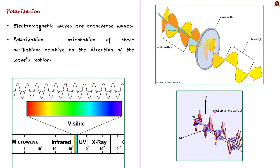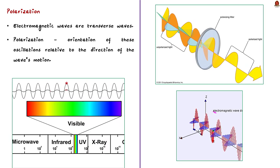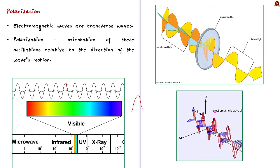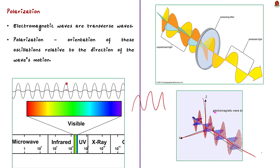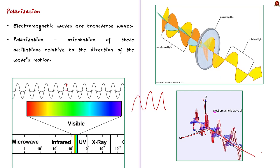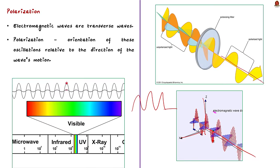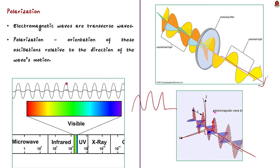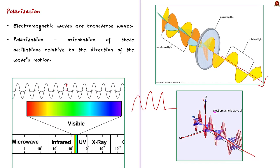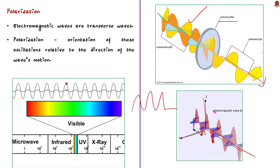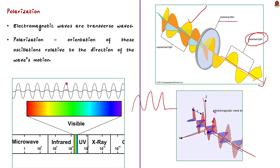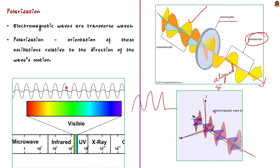We all know that light waves, like all waves in the electromagnetic spectrum, are transverse waves — basically the light waves oscillate perpendicular to their direction of propagation. Polarization refers to the orientation of these oscillations relative to the direction of the wave's motion. As you can see in this image, when unpolarized light passes through a polarization filter, it becomes polarized — its oscillations become aligned to a single direction. This basic phenomenon is called polarization.